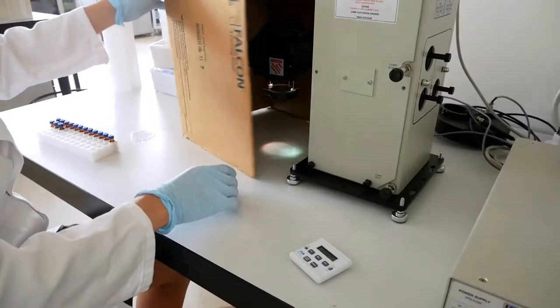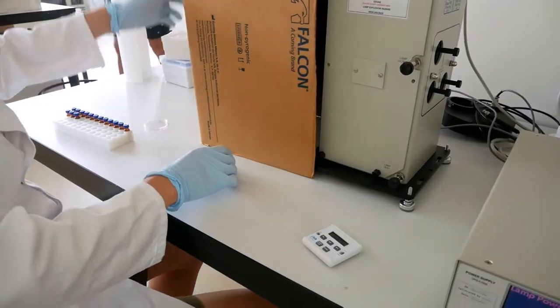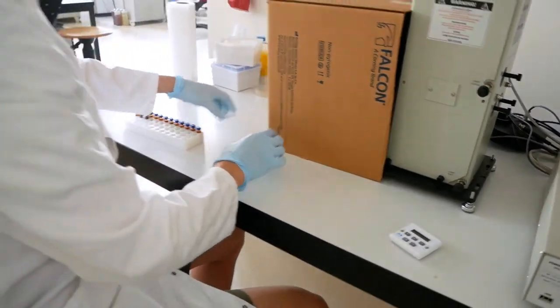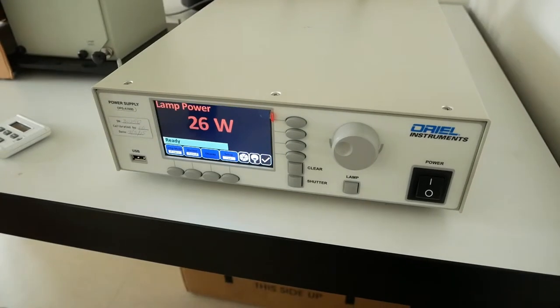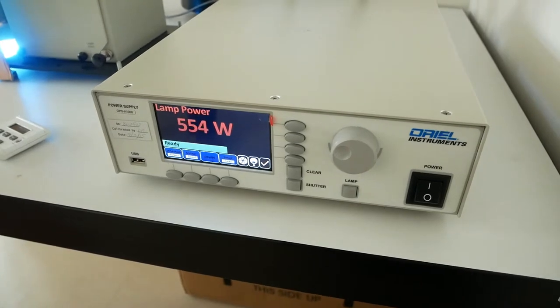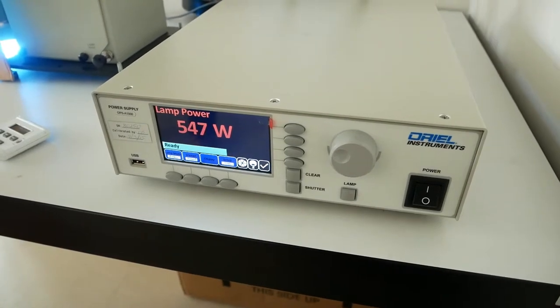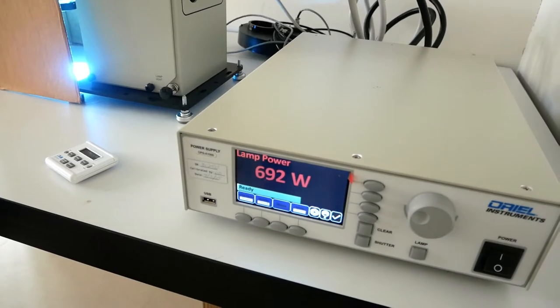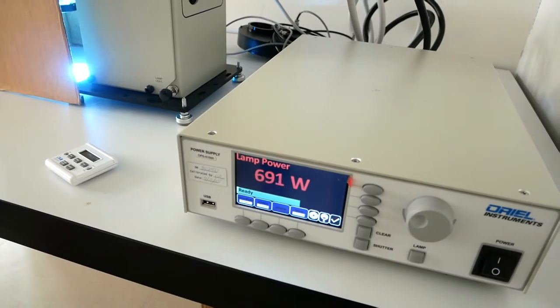We introduced a site-specific photo-uncaging system, where we can localize the lipid precursor inside a specific organelle — the lysosome — where we can release this precursor by a flash of light, and then use mass spec to track the metabolites of this sphingosine, for example.